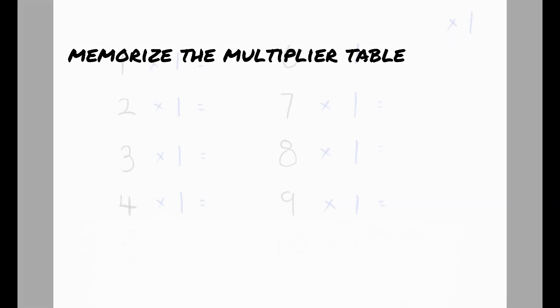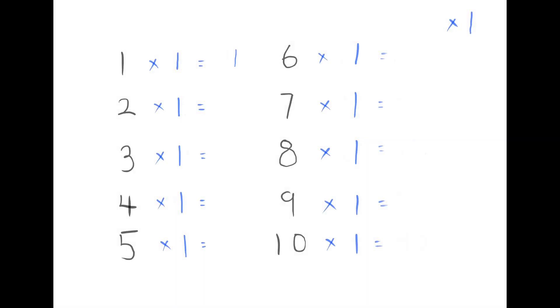After you understand how to calculate multiplication, the last step is to memorize the multiplier table from 1 to 9, in order to speed up the time spent on calculation. Let's go through it once together. 1×1 is 1, 2×1 is 2, 3×1 is 3, 4×1 is 4, 5×1 is 5, 6×1 is 6, 7×1 is 7, 8×1 is 8, 9×1 is 9, 10×1 is 10.